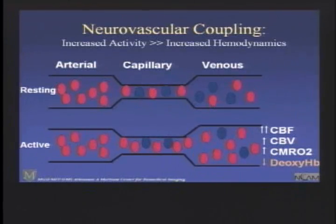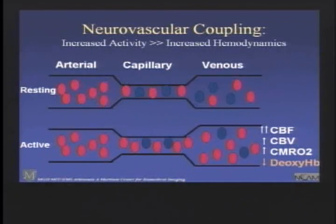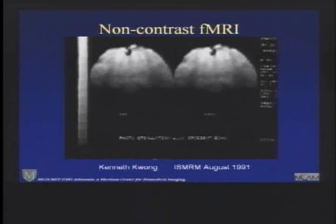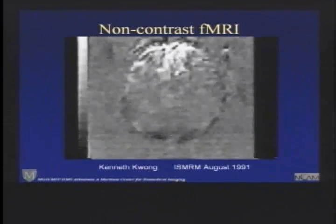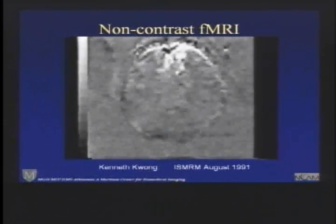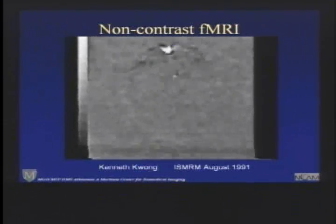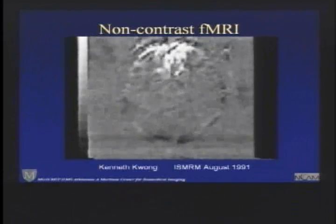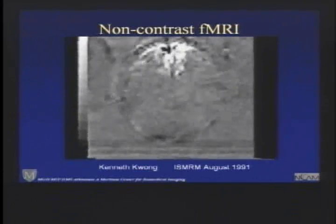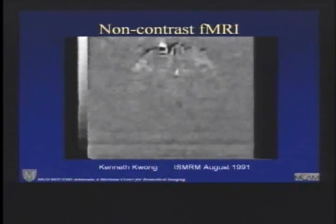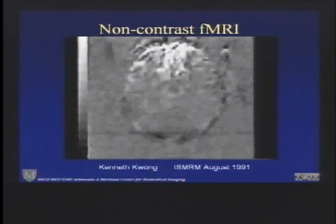The deoxyhemoglobin — the hemoglobin where the blood has been stripped of its oxygen — actually goes down. It was actually Ken Kwong that was the first to show that just doing a series of images that were sensitive, that could be made sensitive to these underlying physiological events,